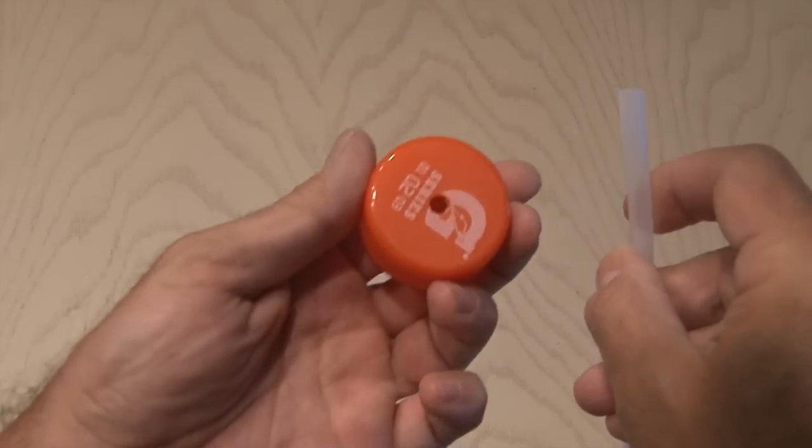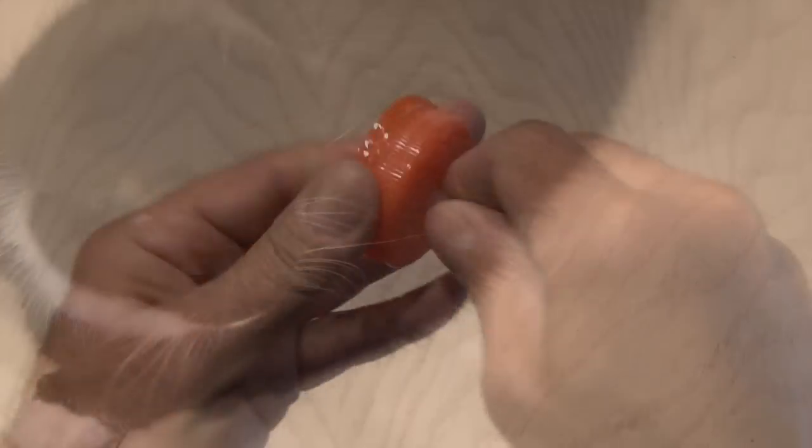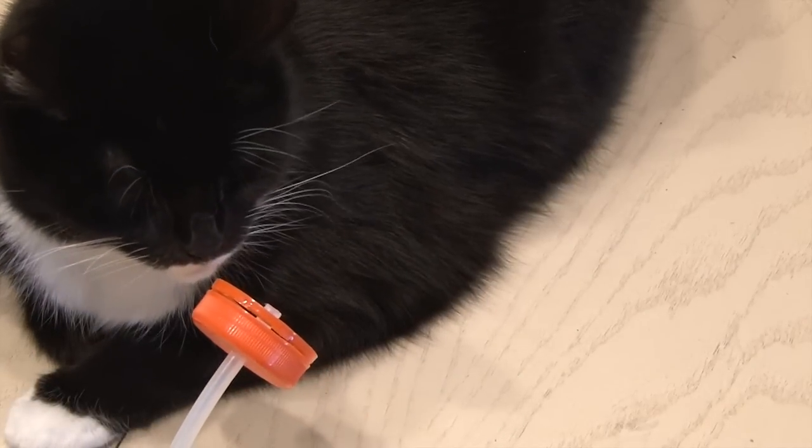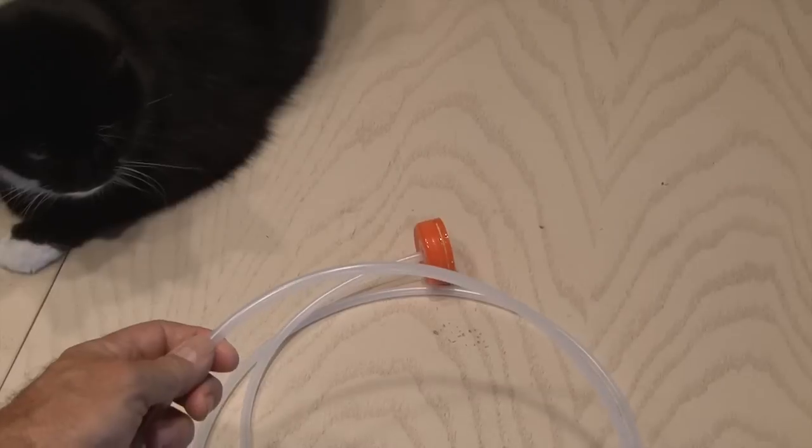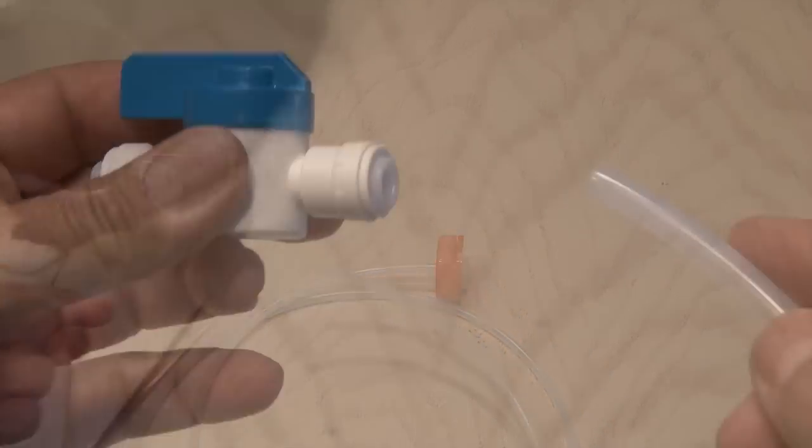You want the hole to be small enough so your quarter inch feed line fits snugly. Now you might want to get your cat to check your work. You want your feed line to be about three feet long, so measure it off and snip it off.